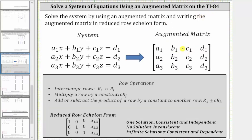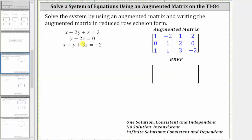To form the augmented matrix, we need to make sure all the equations are in standard form where we have the x, y, and z terms on the left and the constants on the right. Looking at the augmented matrix, the coefficients of x are in the first column, the coefficients of y in the second column, the coefficients of z in the third column, and the constants in the fourth column. In our example, the second equation only contains two variables: y plus two z equals zero, which means the coefficient of x is zero, or we can write it as zero x plus y plus two z equals zero.